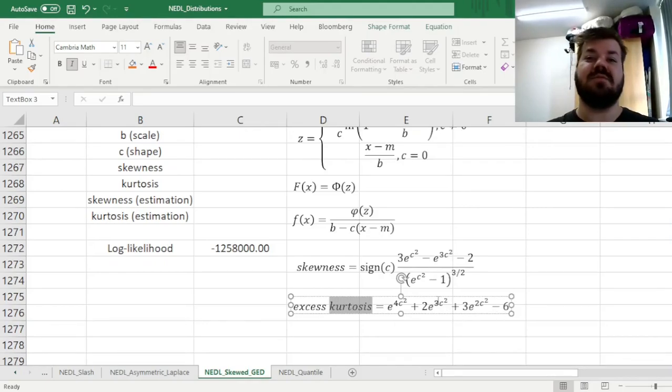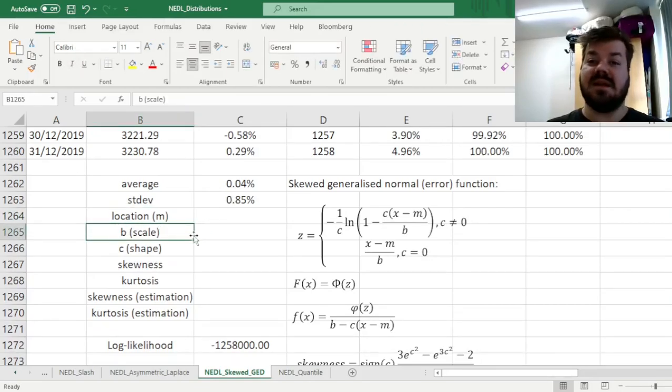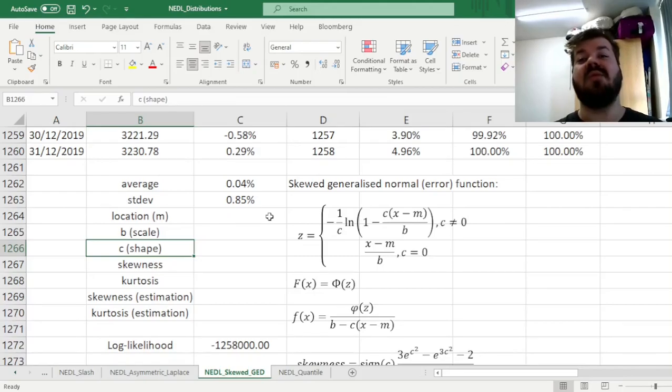And the kurtosis parameter here has a similar take on the shape parameter C. So skewness and kurtosis, the shape of the distribution, depends only on the shape parameter, which is quite intuitive. And if we plug in 0 into both of those, we might be able to verify immediately that our skewness and kurtosis for C equals 0 are going to be 0s, which verifies the fact that for C equals 0 we have got just the regular normal distribution.